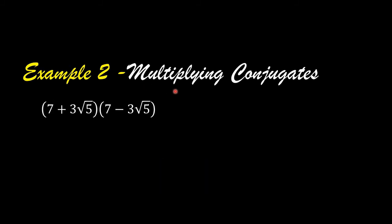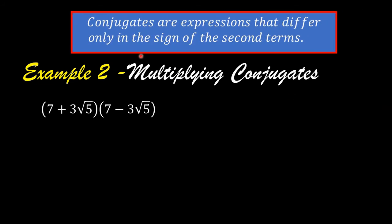Example number 2: Multiplying conjugates. Conjugates are expressions that differ only in the sign of the second terms. These two binomial radical expressions are conjugates because the second term of the first expression is positive 3 square root of 5, and the second term of the second expression is negative 3 square root of 5. One sign is positive and the other is negative.